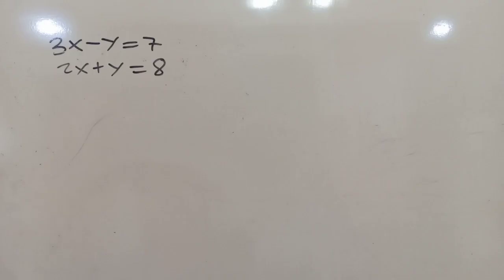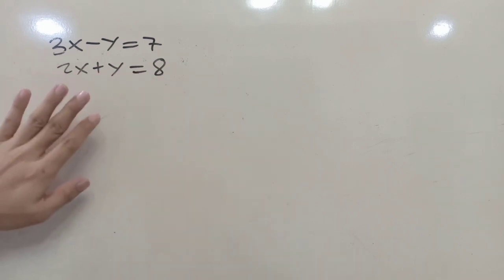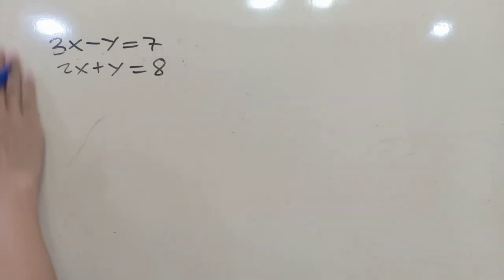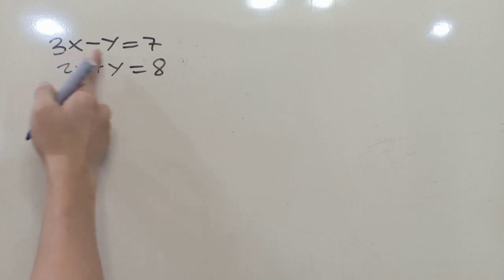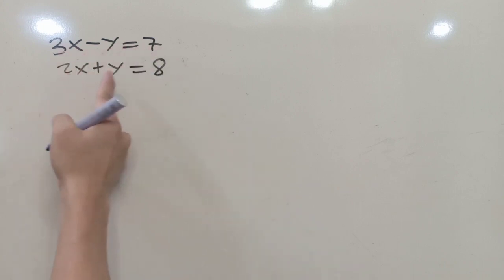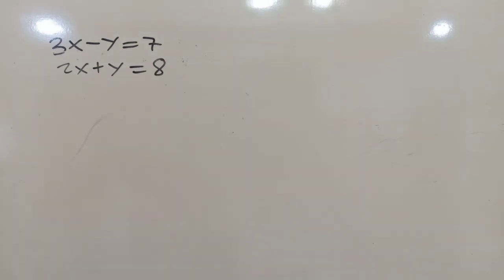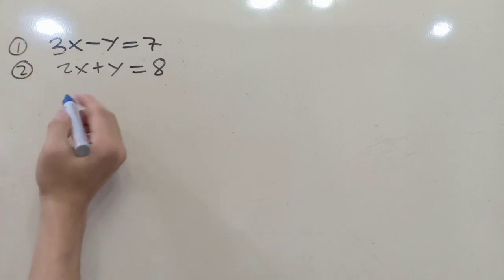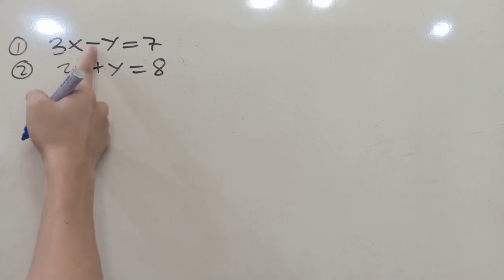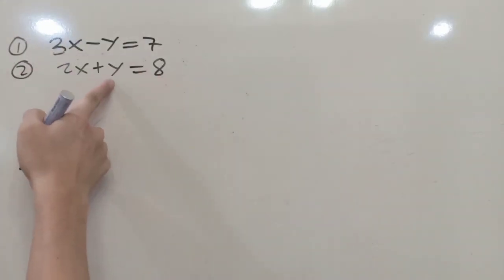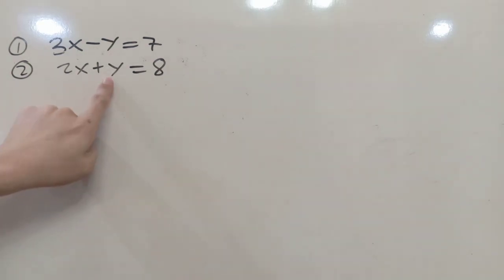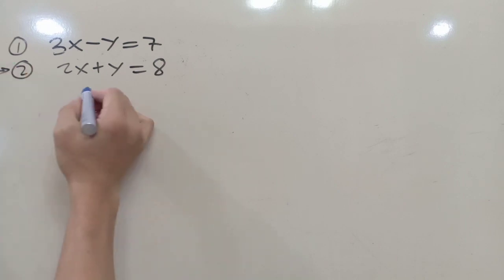Now let's solve a system of linear equations in two variables by the substitution method, using the same example: 3x minus y equals 7 and 2x plus y equals 8. I'll solve the second equation for y first, because y has a coefficient of 1, making it the easiest to isolate. Transposing 2x, we get y equals negative 2x plus 8.